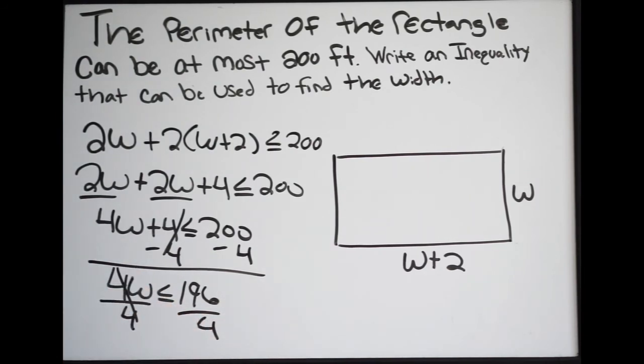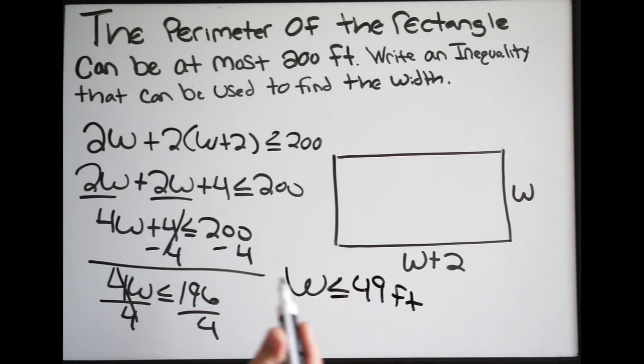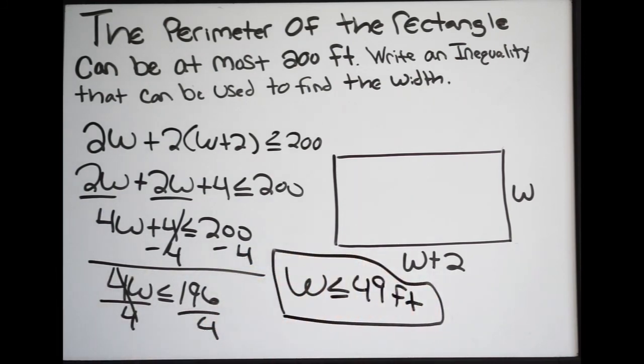So we get here w is less than or equal to 49. Again, this is going to be C. This here is going to be our final answer. So we know that the width has to be less than or equal to 49 feet in order to satisfy our original inequality here, and that is it.